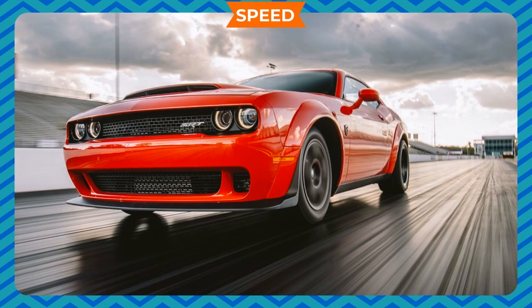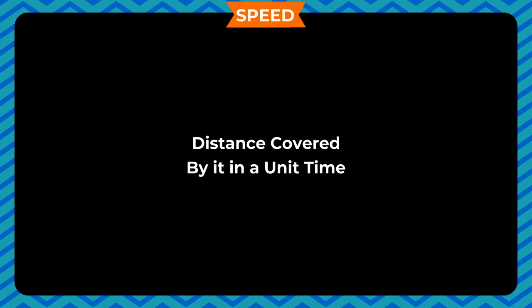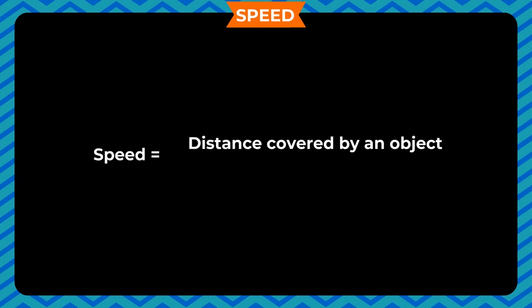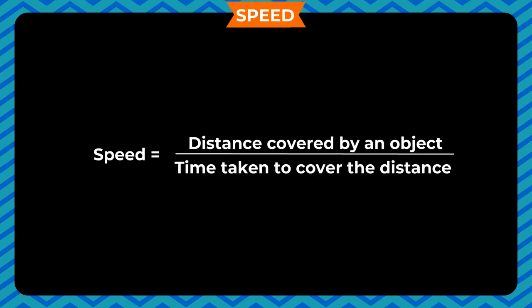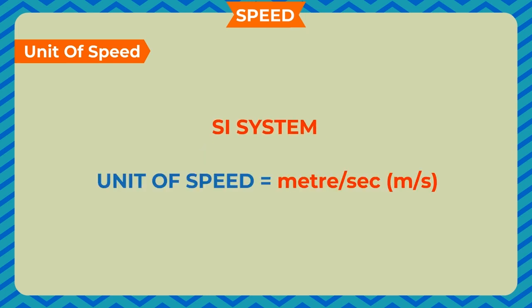Speed: The speed of an object is defined as the distance covered by it in a unit time. Speed is equal to distance covered by an object divided by time taken to cover the distance. In SI system, the unit of speed is meter per second.